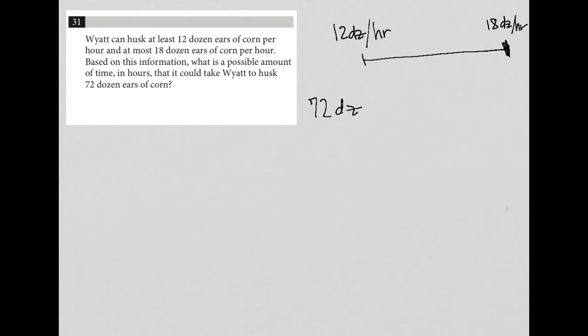Well, if Wyatt is working at his slowest point, which is 12 dozen per hour, then I could just multiply that: in every hour there are 12 dozen that are husked. And if I simplify this, 12 goes into 12 once, goes into 72 six times. And that would say these units will cross out, it would take six hours.